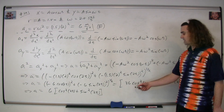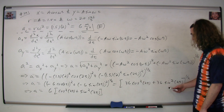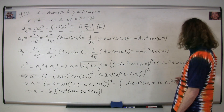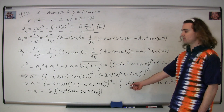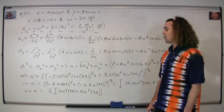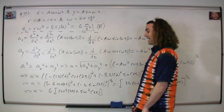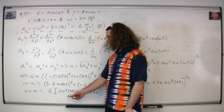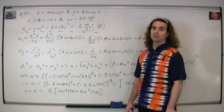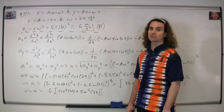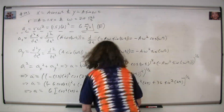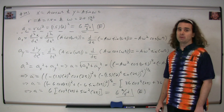When you multiply it out, you get 36 times cosine²(2t) plus 36 times sine²(2t). You can take out the square root of 36, giving 6 times the square root of cosine²(2t) plus sine²(2t). Hopefully you recognize that cosine²(θ) plus sine²(θ) equals 1 — that's the trig identity. So you get 6 meters per second squared.